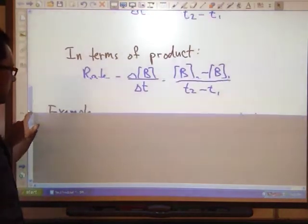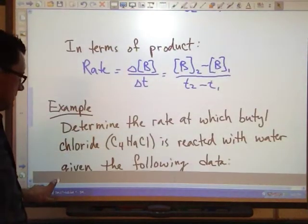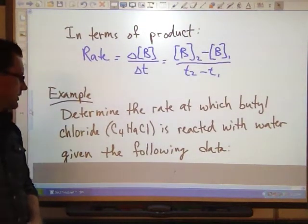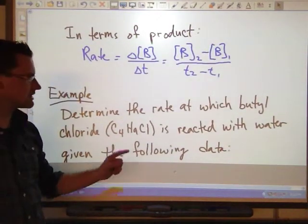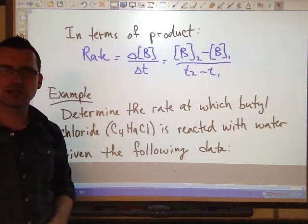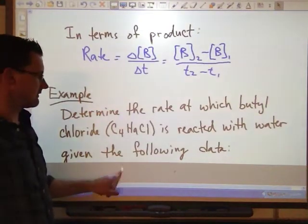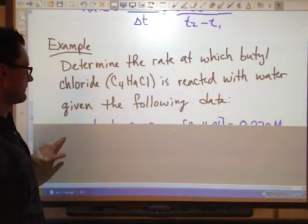Going through an example here that's in your textbook, determine the rate at which butyl chloride, C4H9Cl, is reacted with water given the following data.